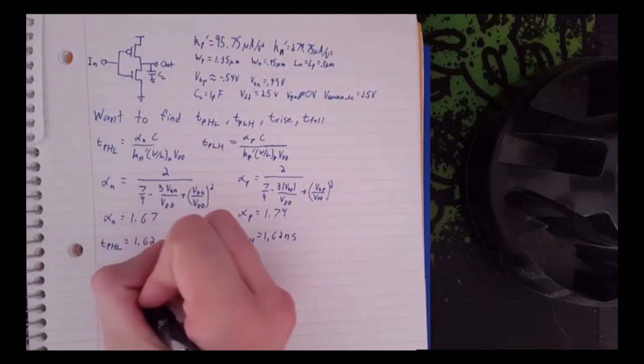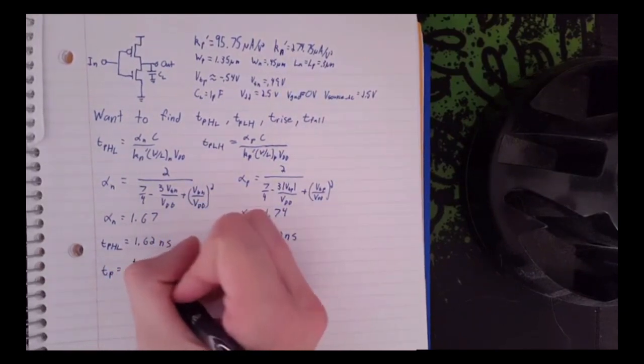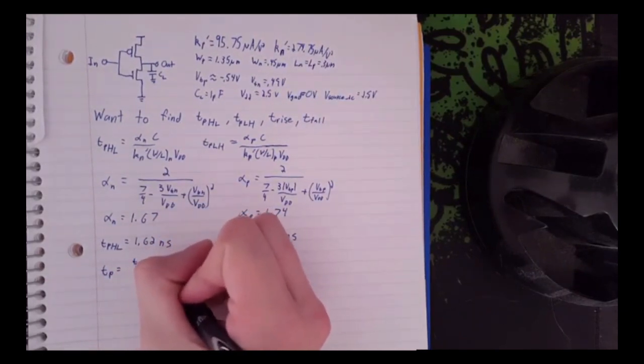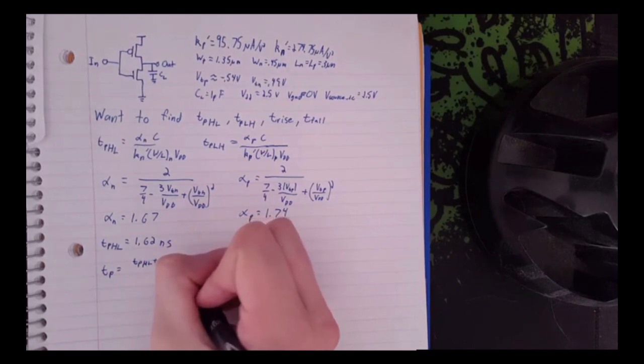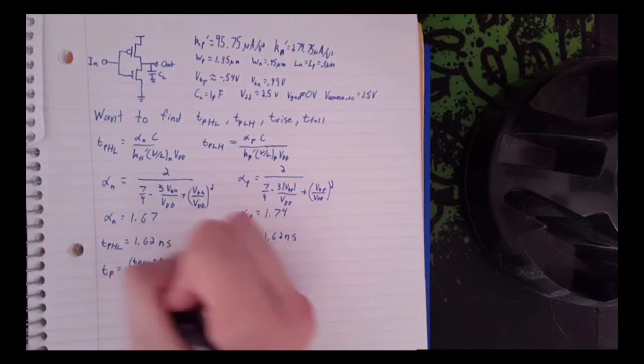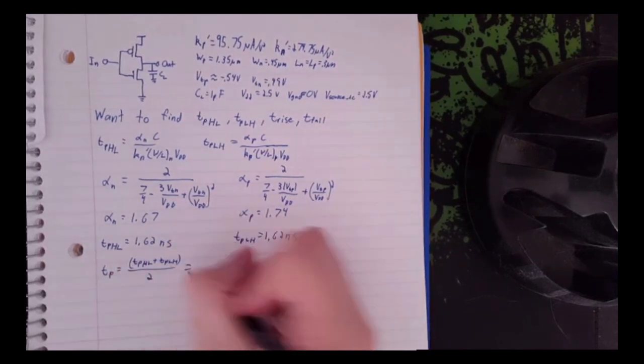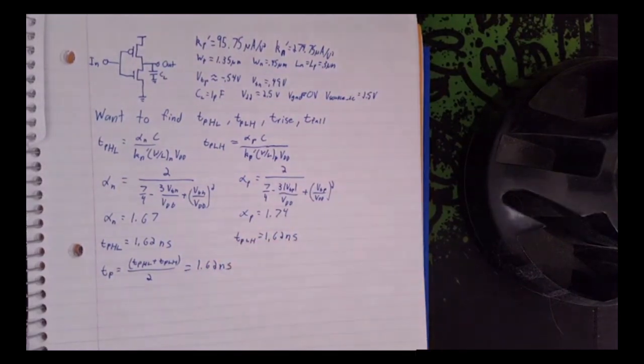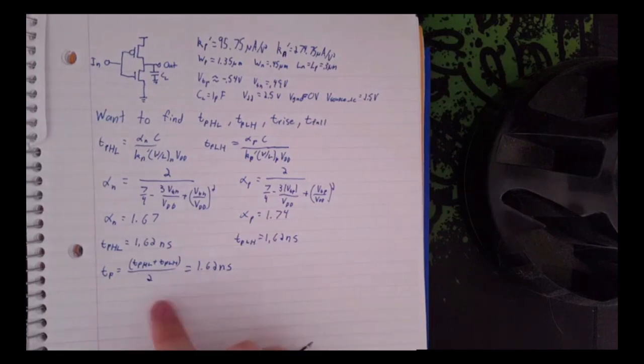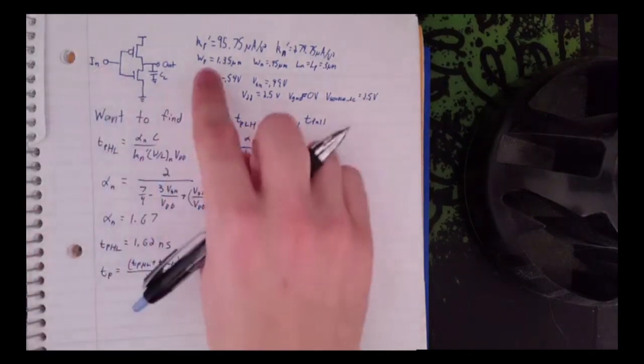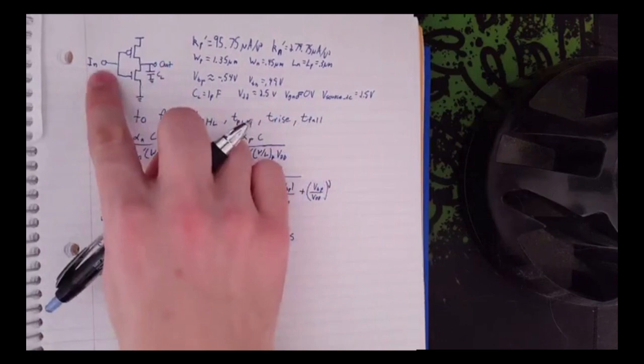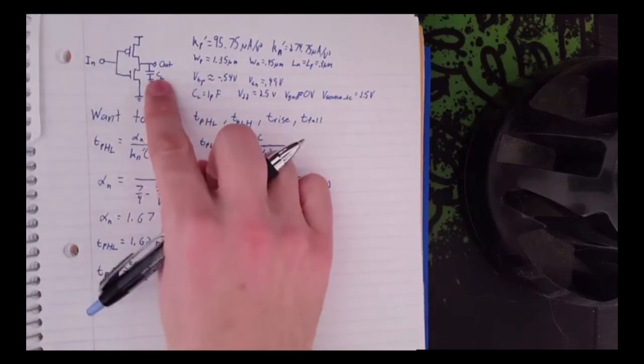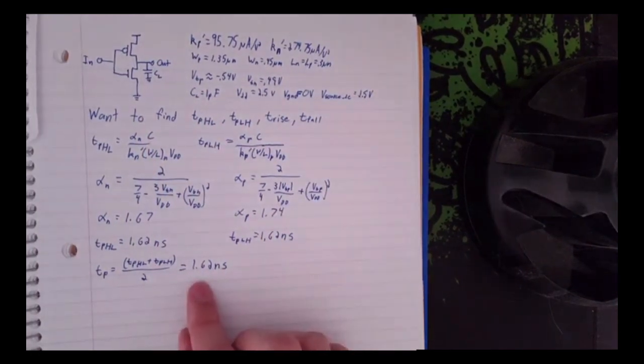To find TP, just take the average of these two, TP-HL and TPLH. This is the delay time between when you put in the input and when you expect to see that at the output. It's going to take about 1.62 nanoseconds.